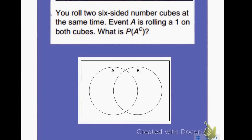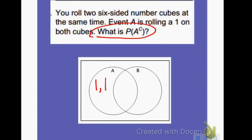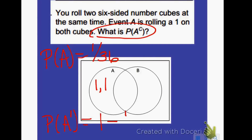Last example: you roll two six-sided number cubes at the same time. Event A is rolling a one on both cubes — that's rolling a one and one. There's only one way to do that out of 36 total outcomes, so P(A) = 1/36. To find the probability of the complement of A, it's much easier to subtract from 1 using our rule: 1 minus 1/36 equals 35/36. Hopefully today you've learned more about set notation — the complement and the event add to give 1, and you can subtract from 1 to get the complement.